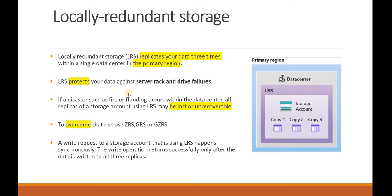LRS replicates your data three times within a single data center in the primary region. It protects data from server rack and drive failures, but if a disaster, flooding, or any outage occurs in that data center, your data is not recoverable and will be lost. To overcome this risk, you can use ZRS, GRS, or GZRS. When writing data, it synchronously writes and returns, creating three replicas.